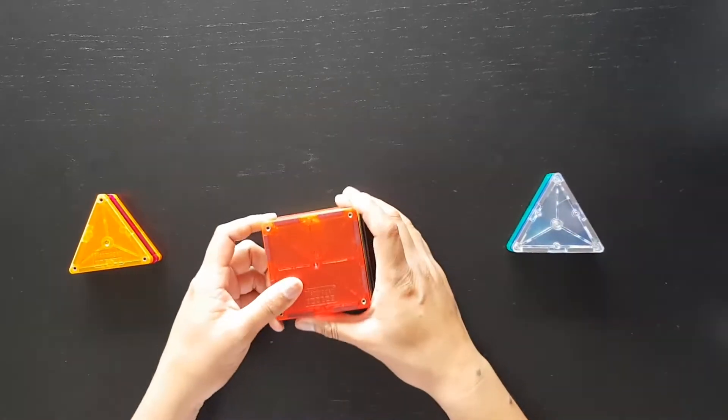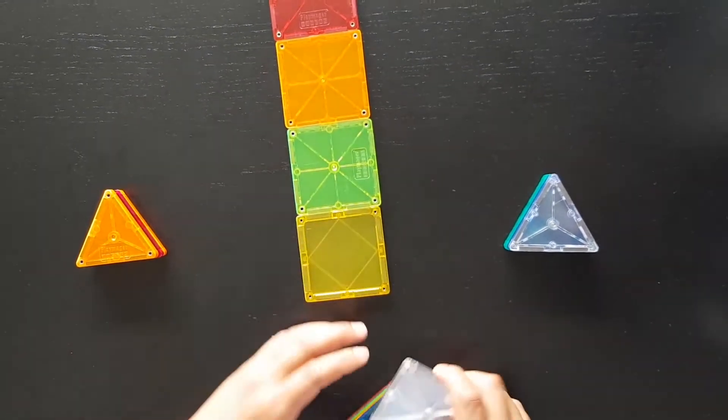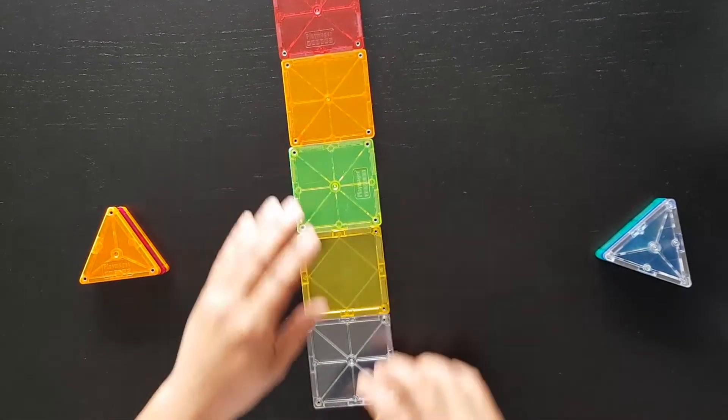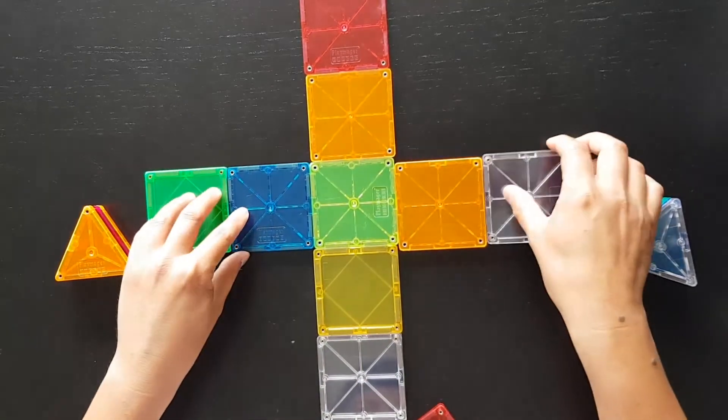We'll get started by lining up all the squares, five of them in a single file. And from there we're going to be utilizing another two more squares on each left and right side.